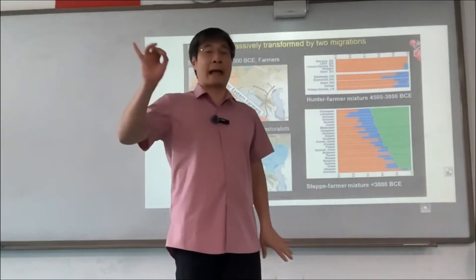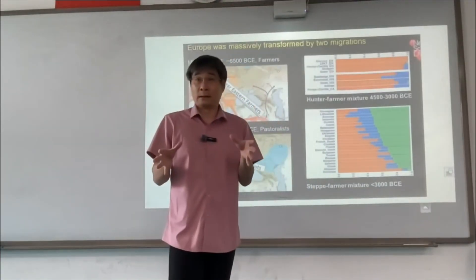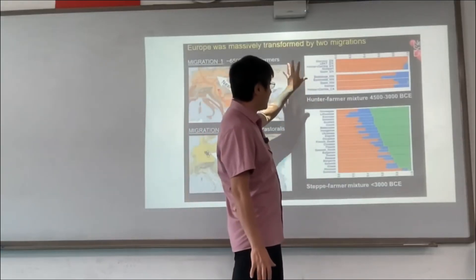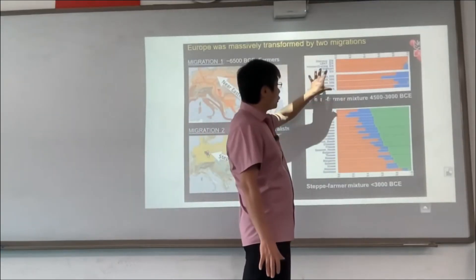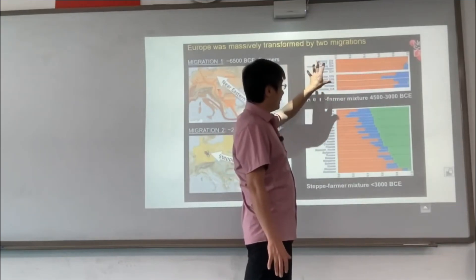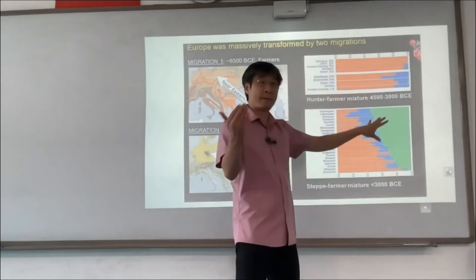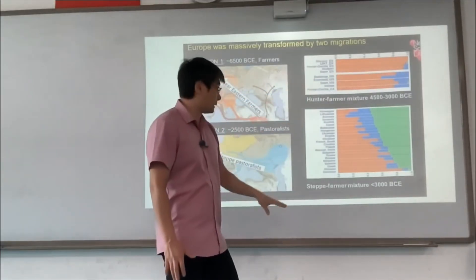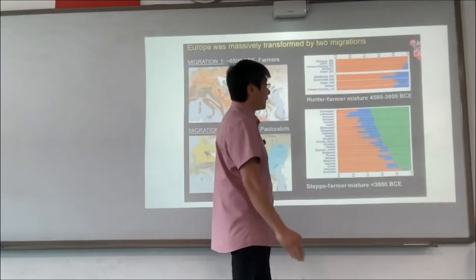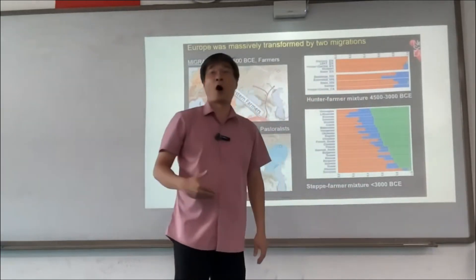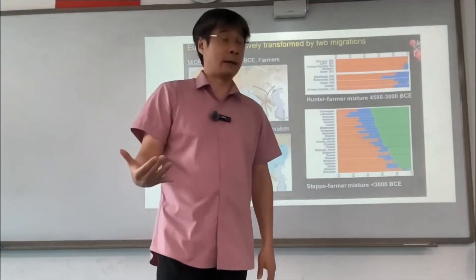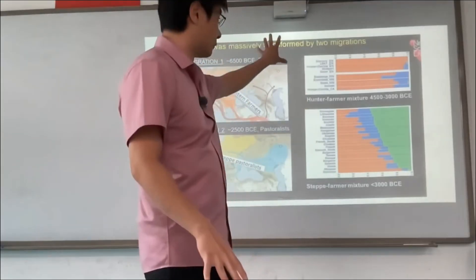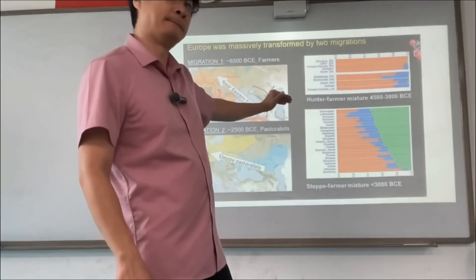What I will show you next class is the DNA evidence. If you look at the DNA of people today, what you will see is that about 4500 BCE, most people in Europe had genes that were a mix of farmers who came from Anatolia and hunter-gatherers who were there originally. But then after 3000 BCE, you have this green come in — the Yamnaya, the Proto-Indo-Europeans. I want you guys to understand what happened.